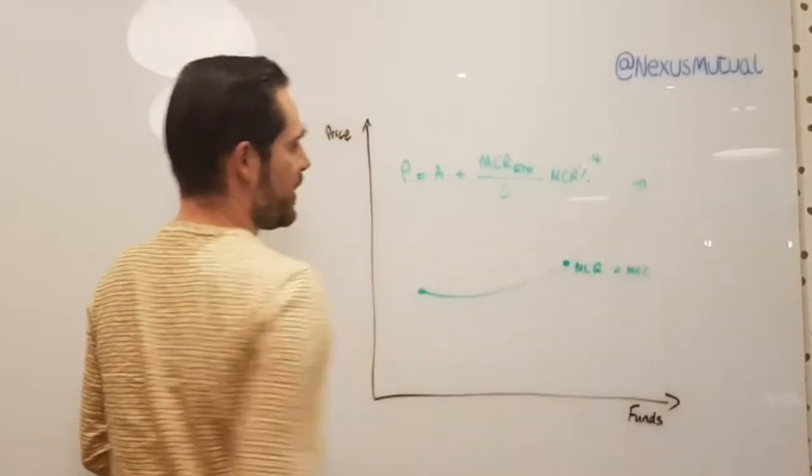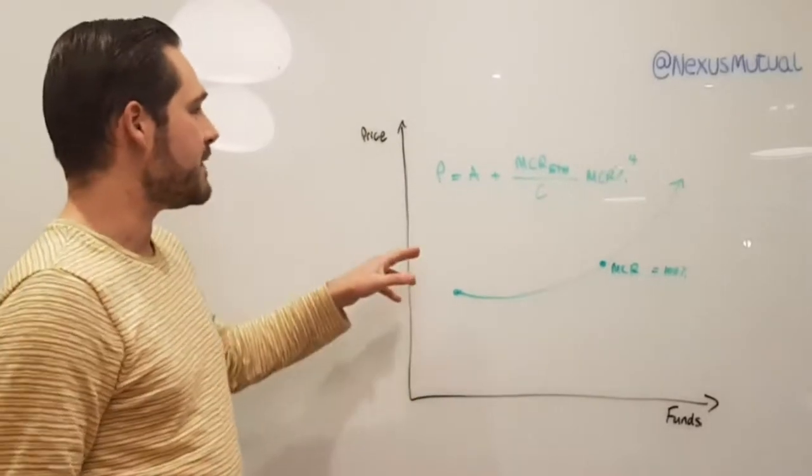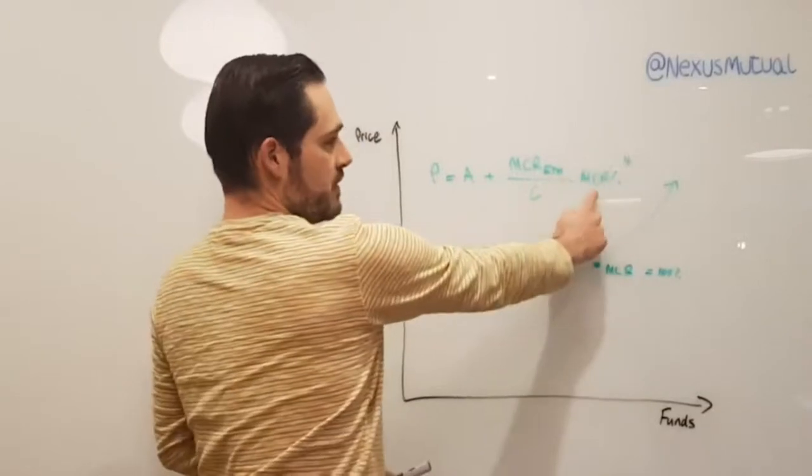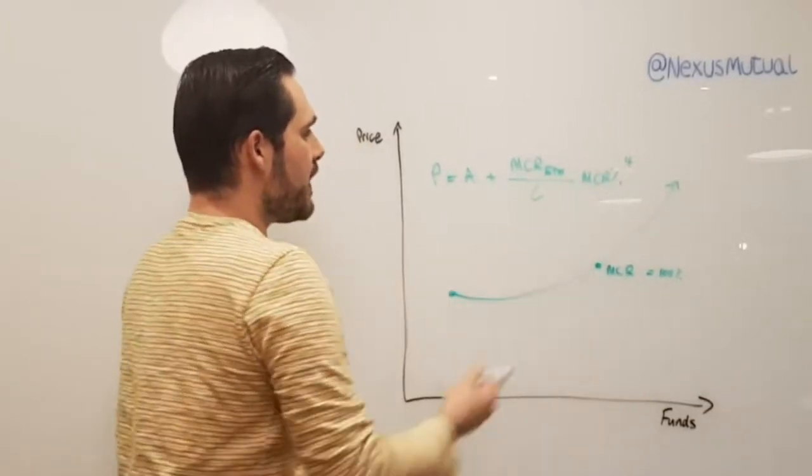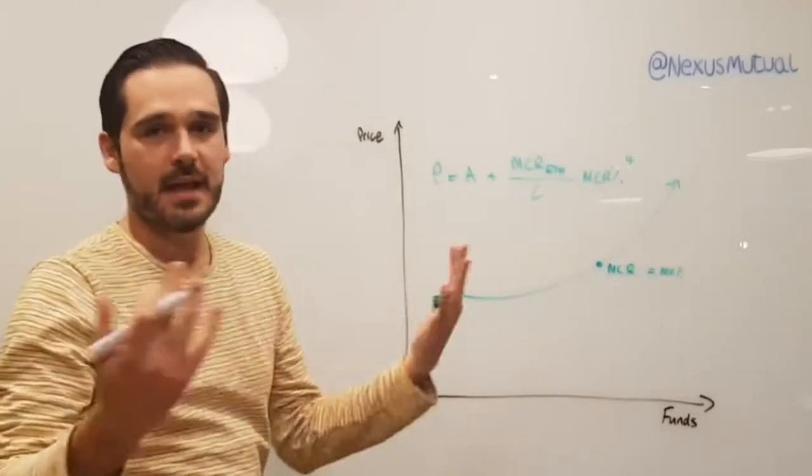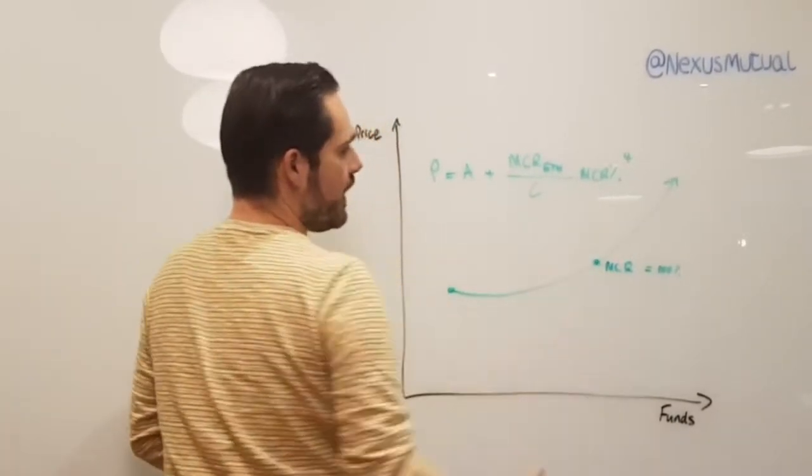Very quickly, what that means is when the MCR equals 100%, then that term just becomes 1, and you end up with the minimum capital requirement in Ether, which we'll say starts at 5 million, and that gives you a value here.